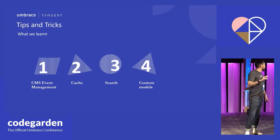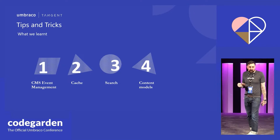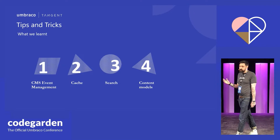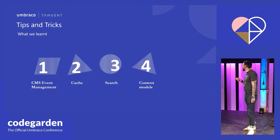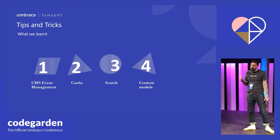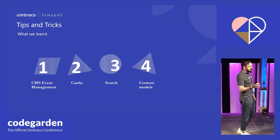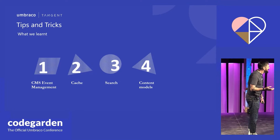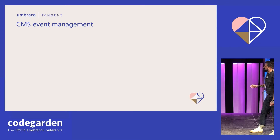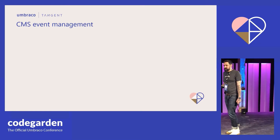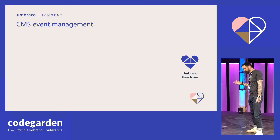There are four tips and tricks I wish we'd learned before we started this project. One is how we handle CMS events, the other is how we handle cache, the next is how we handle site search, and lastly some really obvious tips about how we handle content models. At the heart of our system is Umbraco Heartcore — probably why they called it Heartcore, because it's at the heart of people's systems.